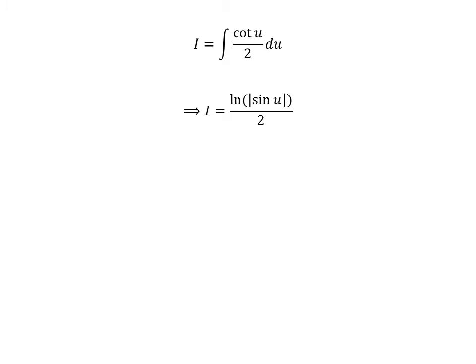This is a simple integration. Half is the constant. The antiderivative of cotangent of u is natural log of absolute value of sine of u. How to find the antiderivative of cotangent has been explained in the video appearing in the upper right corner of this video. The url of the same video has been given in the description section as well. So, i is equal to half of natural log of absolute value of sine of u.